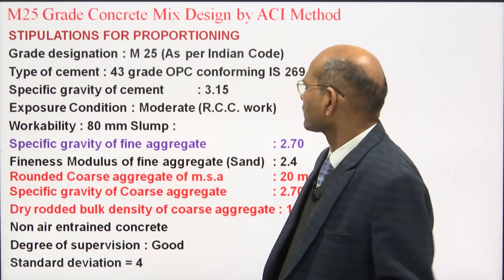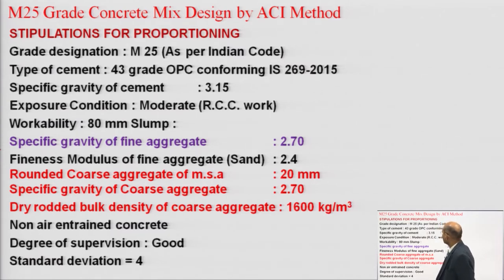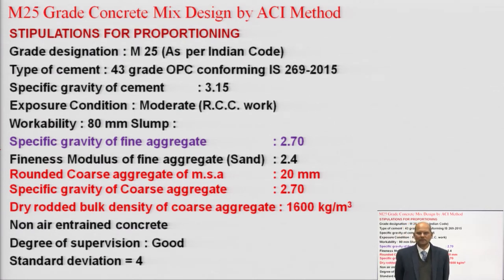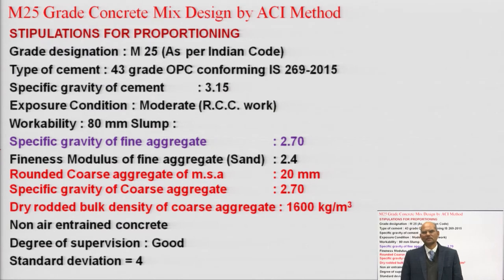Here I have taken an M25 grade of concrete. Let's see what data is required. We need to consider the stipulations. Generally we need a grade designation — M25. As per Indian code, the ACI code specification is different because they consider tests on cylinders, but we do tests on cubes. Our test cube size is 150mm × 150mm × 150mm, and they work on cylinders — generally diameter 150mm and height 300mm.